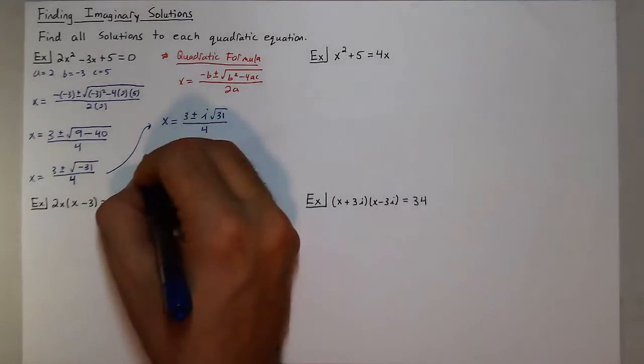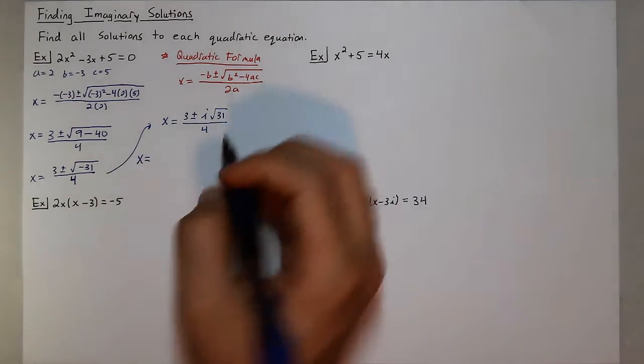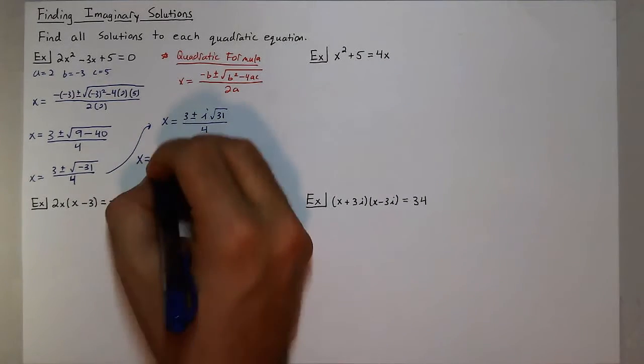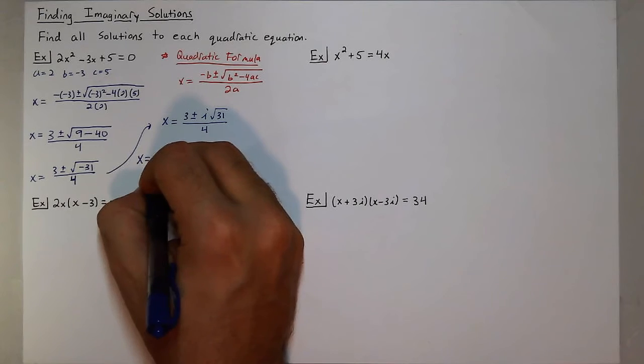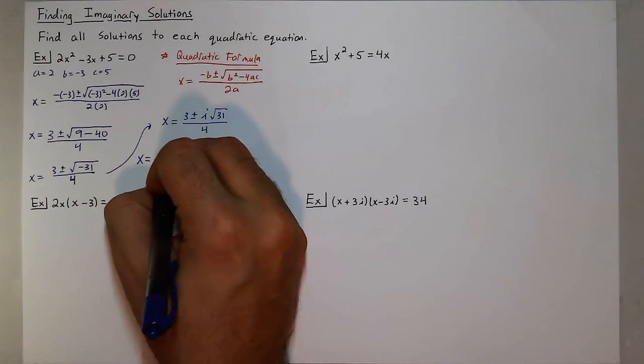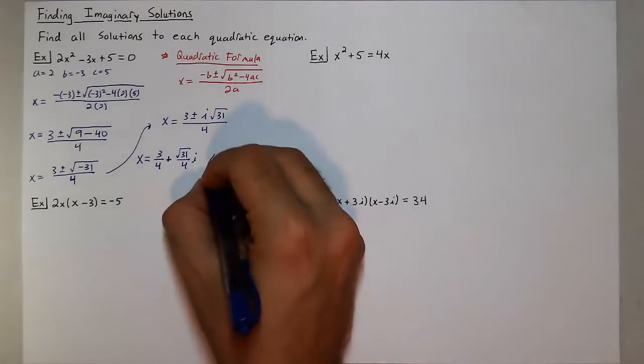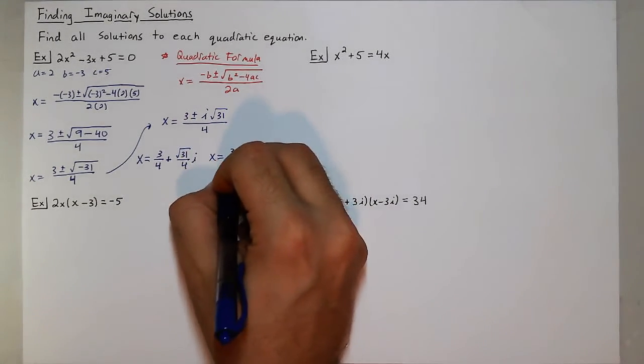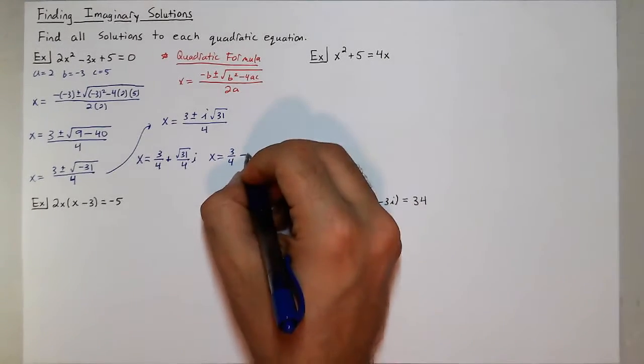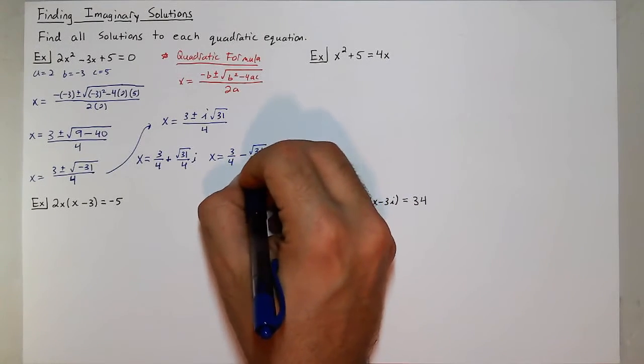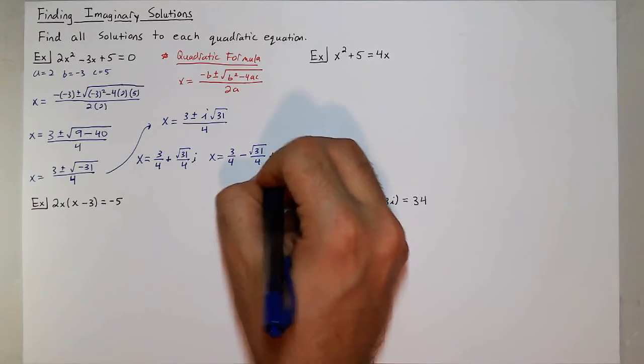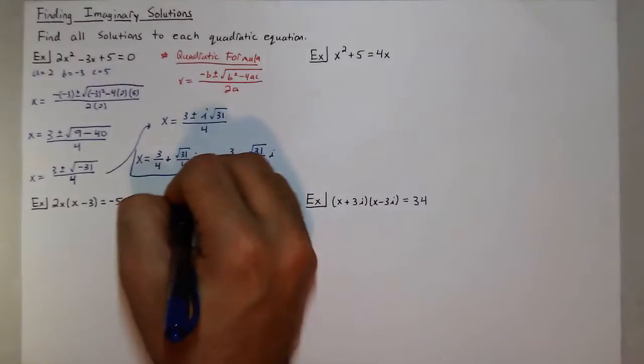So now the two solutions I get, written as the real and the imaginary part, would be 3/4 plus the square root of 31 over 4 i, and x equals 3/4 minus the square root of 31 over 4 i. So we get two imaginary solutions.